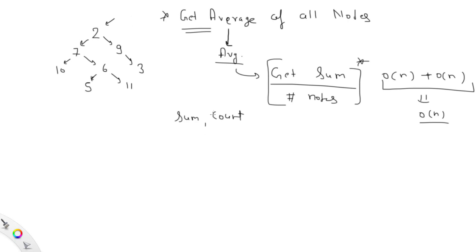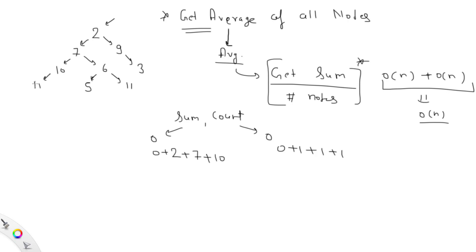Let's walk through an example. Starting at the root, sum is 0 and count is 0. We visit node 2: sum becomes 2, count becomes 1. Going left, we visit 7: sum = 9, count = 2. Going left again to 10: sum = 19, count = 3. Both left and right of 10 are null, so we return. Then we visit 6: sum = 25, count = 4. Then 5: sum = 30, count = 5.